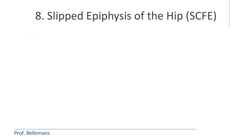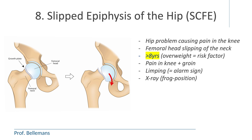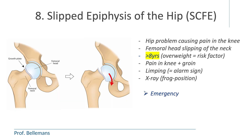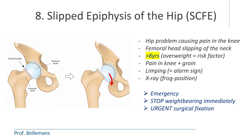Finally, slipped epiphysis of the hip — actually a hip problem causing pain in the knee. The femoral head slips off the femoral neck, and that is a dangerous condition. It usually happens in kids older than 8 years, and overweight is a risk factor. Frequently there is pain both in the knee and the groin, but sometimes only in the knee, which can be very confusing. Typically the child is also limping, which is an alarm sign. An x-ray in the frog position will confirm the diagnosis. Slipped epiphysis of the hip is considered a medical emergency — weight-bearing should be stopped immediately and urgent surgical fixation is required.